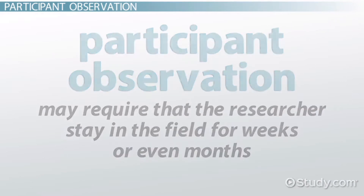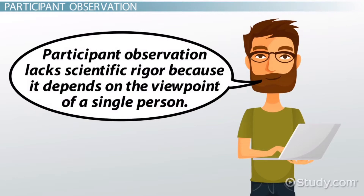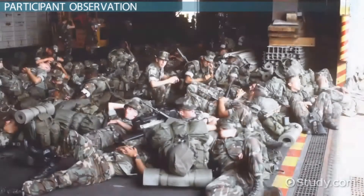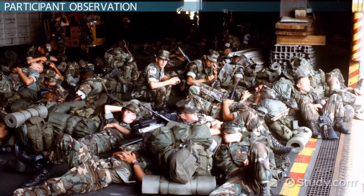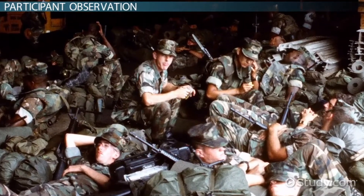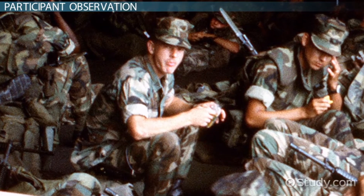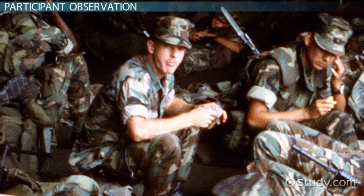From a scientific point of view, participant observation lacks scientific rigor because it depends on the viewpoint of a single person. However, its personal approach is also its strength. An observant researcher can often gain important insight into people's behavior that a survey or interview cannot obtain. Observation might be overt or covert as well.